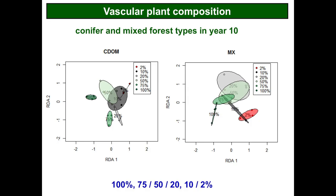For the conifer dominated forest, the unharvested control sits out by itself, different from everything else that was harvested. In the middle ground we have the 50%, 75%, 20%, and even a chunk of the 10% overlapping, and then the 2% sits off to the right. A similar pattern appears in the mixed forest: the 100% sits over here, the 2% over there, and the other treatments largely overlapping, with the 10% and 2% tending to be more similar to one another. So we see unharvested control as distinct, a group of mid-level harvesting treatments grouping together, and the 10% and 2% — or just the very lowest — sitting apart and being different from everybody else.